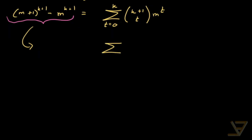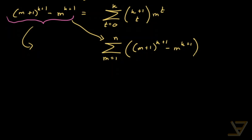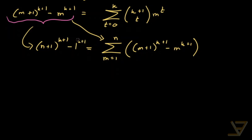We're going to take the sum from m equals 1 through n. This is an exploration — the idea of exploring this is natural and it happens to lead to a solution to our problem. So we have the sum from m equals 1 through n of (m+1) to the k+1 minus m to the k+1. When we telescope, we get (n+1) to the k+1 minus 1 to the k+1, which is just 1, so we don't need to include that separately.